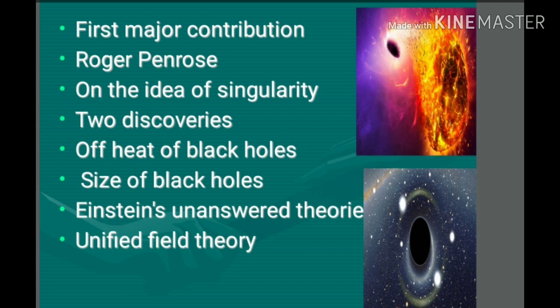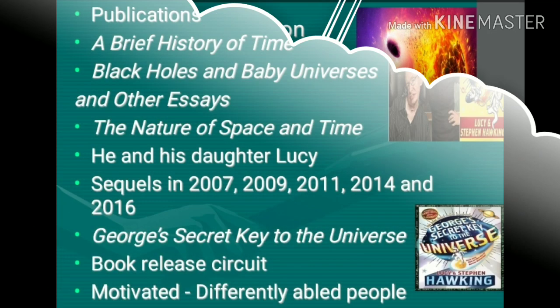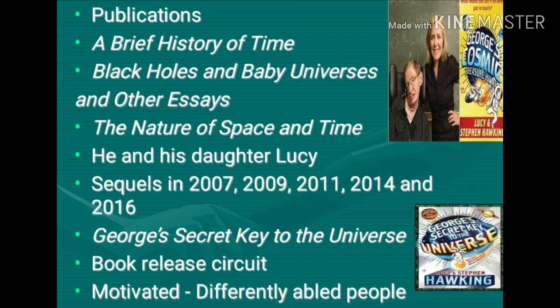Stephen Hawking made his first major contribution in association with Roger Penrose on the idea of singularity. He became popular in 1974 for his two discoveries: Hawking Radiation of Black Holes and Size of Black Holes. Hawking Radiation is also known as Hawking Radiation. In the 1980s, Hawking answered one of Einstein's unanswered theories, the famous unified field theory. Stephen Hawking published a best-selling non-fiction book, A Brief History of Time: From the Big Bang to Black Holes.